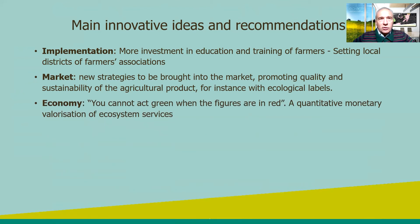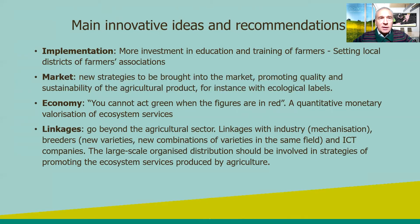We acknowledged that you cannot act green when the figures are in red, so a quantitative monetary valorization of ecosystem services is really needed. We have to go beyond the agricultural sector and set linkages with industry — for instance, for the production of new mechanization systems — with breeders to develop new varieties and new combinations of varieties in the same field, and with ICT companies to develop smart agriculture. Finally, large-scale organized distribution should be really involved in strategies of promoting the ecosystem services produced by agriculture.